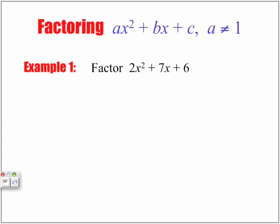So when factoring AX squared plus BX plus C when the A value is not equal to 1 — here is our first example: factor 2X squared plus 7X plus 6. Here is our A value, and notice that our A value is not equal to 1. So what are the steps taken to factor such a trinomial?